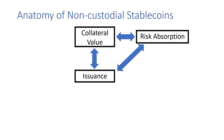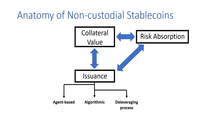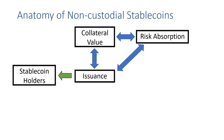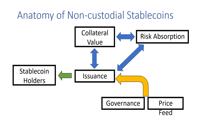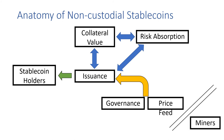This also connects with an issuance process, which determines the actual stablecoin supply. This can be agent-based — as in DAI, where agents decide how much to mint and redeem stablecoins based on the risk they're taking in leveraged positions. It can include algorithmic issuance, encoded in the smart contract itself. It also includes a deleveraging process that seeks to reduce the supply when collateral value drops. The remaining elements are stablecoin holders who seek stability, a governance mechanism and price feeds that provide required inputs and allow the system to evolve over time, and miners who are tasked with ordering transactions.